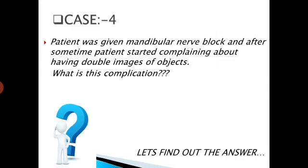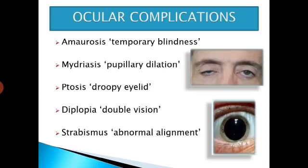Case No. 4. A patient was given a mandibular nerve block and after some time started complaining about having double images of objects. What is this complication? The answer is ocular complication. There are many ocular complications, namely amaurosis (temporary blindness), mydriasis (pupillary dilation), ptosis (droopy eyelid), diplopia (double vision), and strabismus (abnormal alignment of the eye).